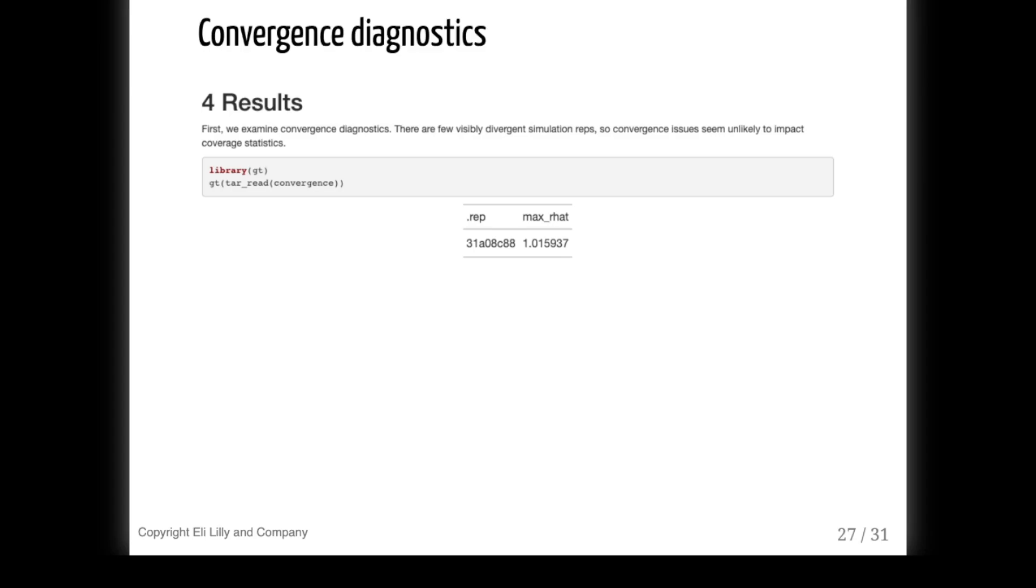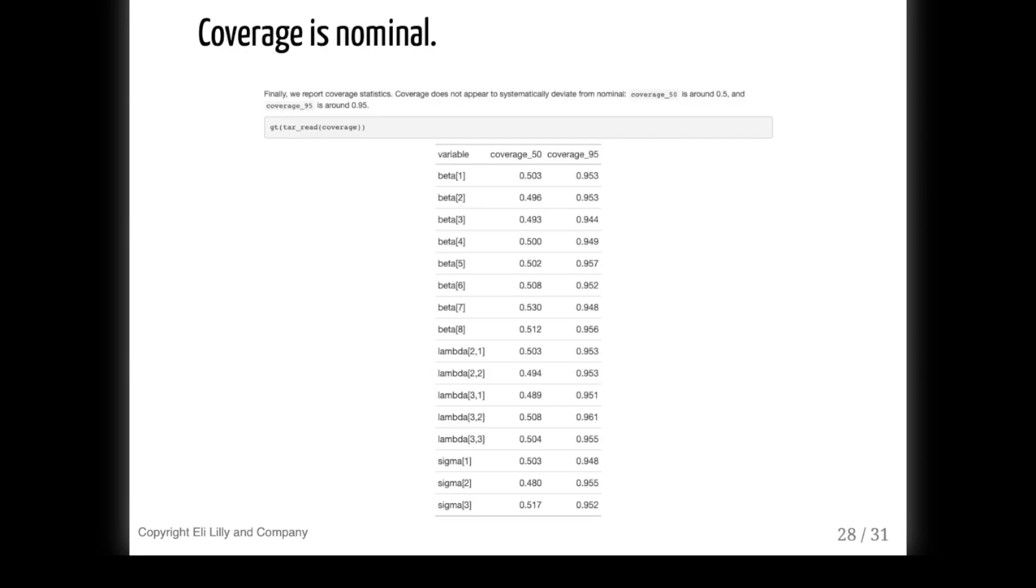Convergence diagnostics look pretty good. There is only one simulation with any potential scale reduction factors above 1.01. And coverage looks nominal. On average, 50% of the 50% posterior intervals covered the true parameters, and likewise around 95% of the 95% posterior intervals cover the truth, which is evidence of pretty good calibration. So we have a complete, well-documented story wrapped up in an R Markdown document backed by a powerful targets pipeline.